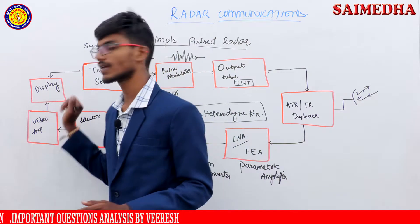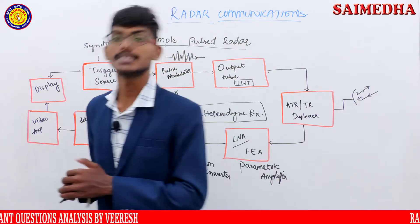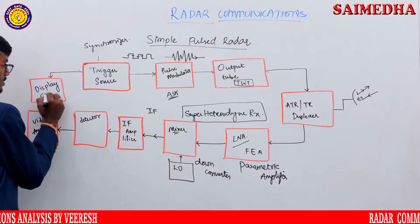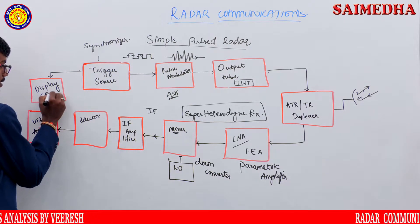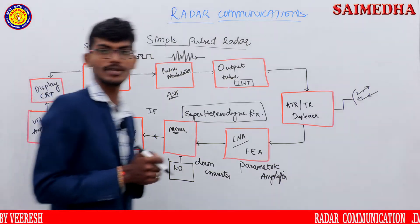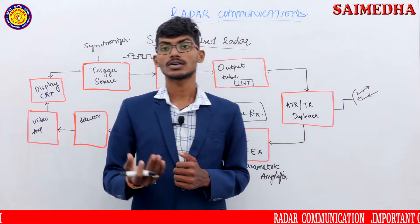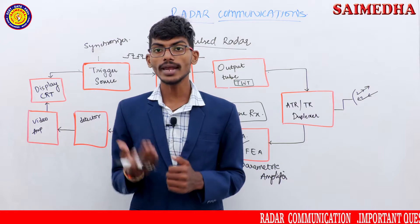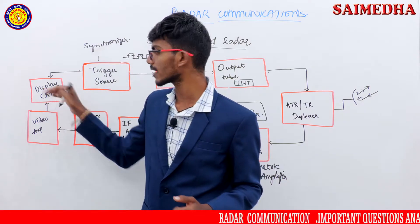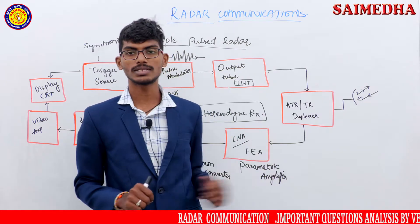After the video amplifier, the signal is sent to the display. Normally, the display used here is a CRT display. CRT is an acronym for Cathode Ray Tube — that is the tube used in the display of the simple pulsed radar.